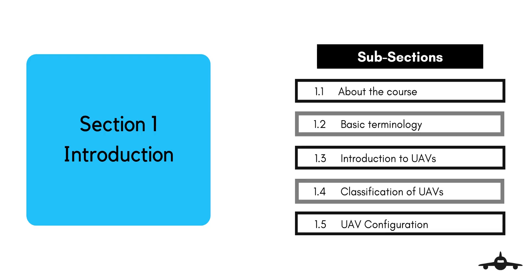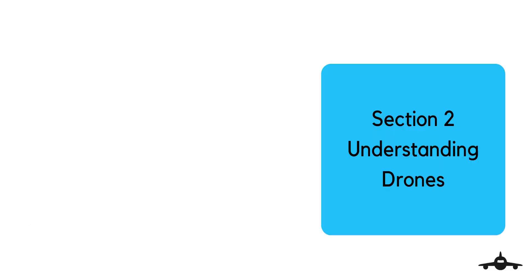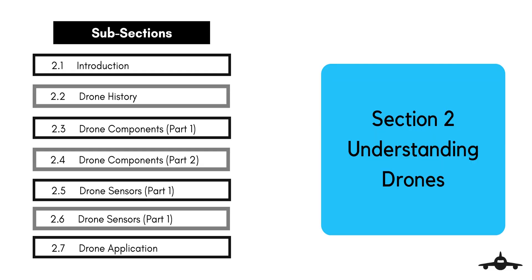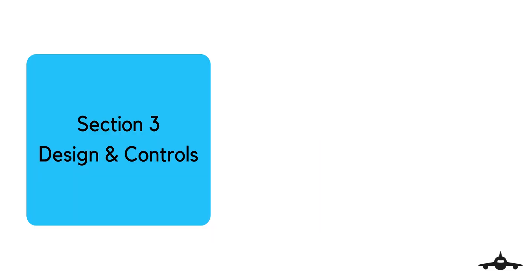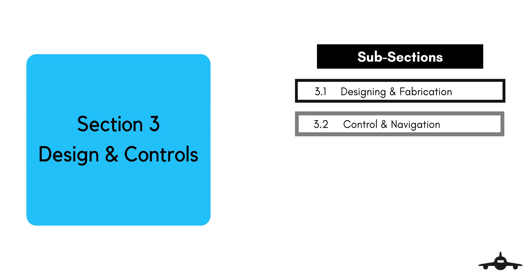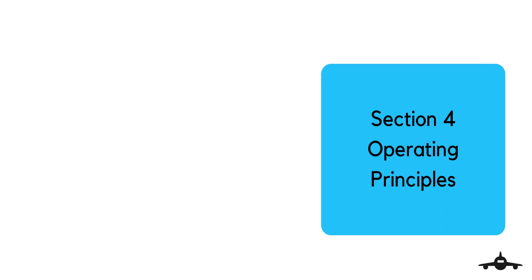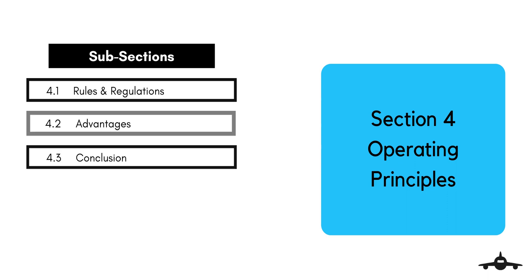Section one comprises the basic introduction of UAVs and their classification. Section two includes an introduction to drones, their history, parts and components, and their use. Section three comprises design and control and modes of operation. Section four includes operating principles, rules and regulations to remotely operate drones for their mission.